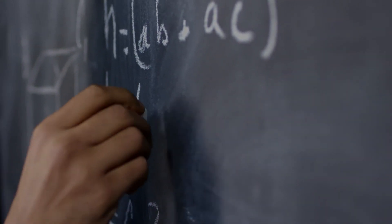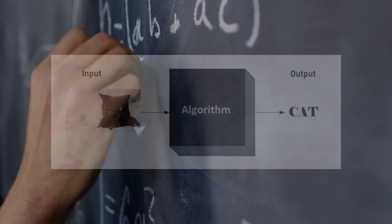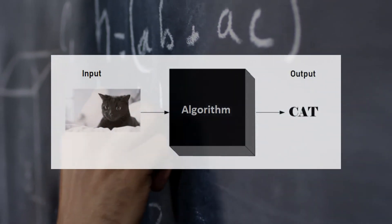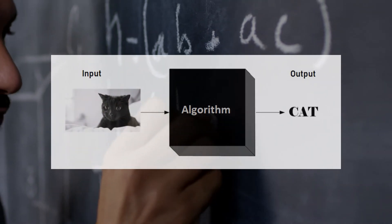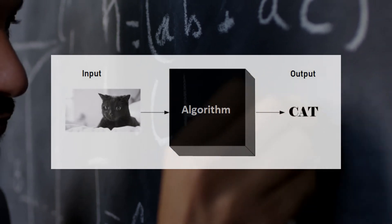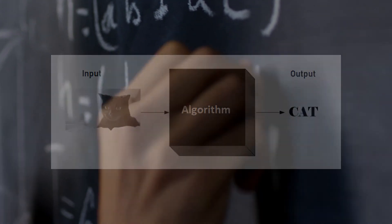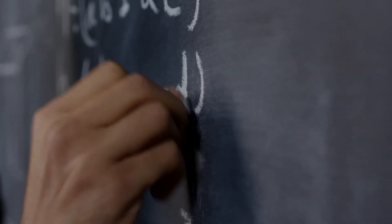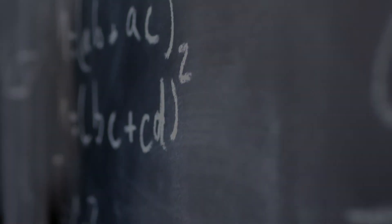Modern AI engineers design algorithms and, after design, bring them to life using computer programming. What is required is input and an algorithmic process — the algorithm learns from inputs and provides output. Considering the level of math and computer science skills required, this level is not suitable for accountants in my opinion.